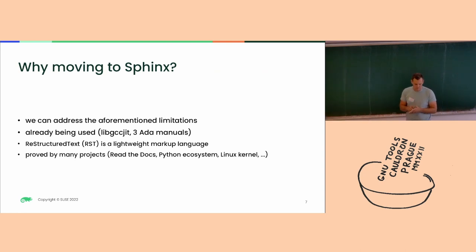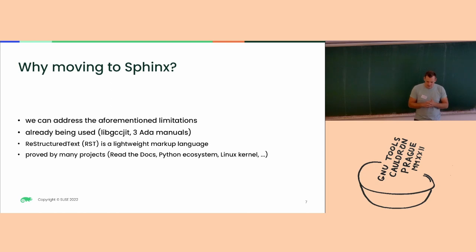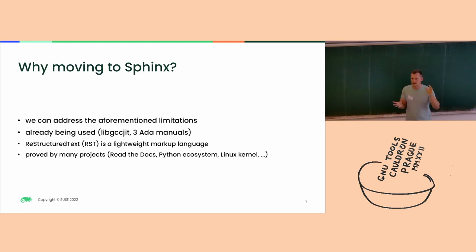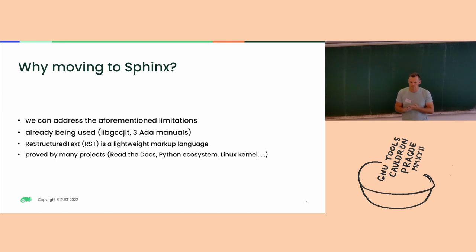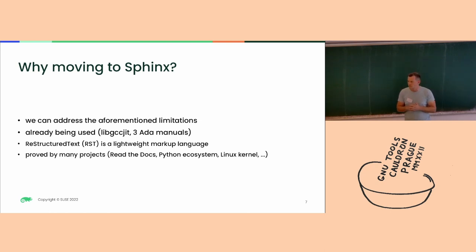The motivation for moving to Sphinx: number one is addressing all the limitations I showed previously. Second is that we already use it. About the syntax — it's a markup language, somehow similar to texinfo. It's not a DocBook fancy XML complex thing. It's fairly simple for people who write code and need to document stuff. It was proven useful by the Python community. The kernel is also using Sphinx. There's an entire project called Read the Docs hosting apparently 100,000 documentations from different projects — quite a huge ecosystem.